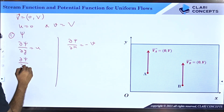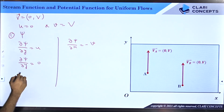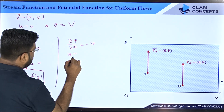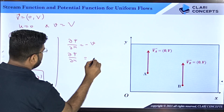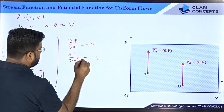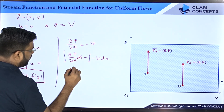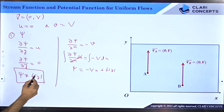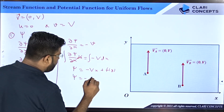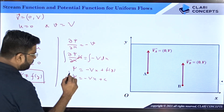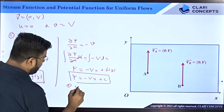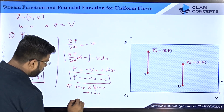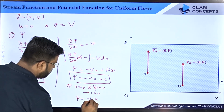For the stream function, ∂ψ/∂y = u and ∂ψ/∂x = −v. Since u equals zero, ∂ψ/∂y = 0, which means psi is not a function of y. Then ∂ψ/∂x = −v = −V. Integrating with respect to x gives ψ = −Vx plus some function of y. But since psi is not a function of y, that function becomes just a constant, and setting ψ = 0 at x = 0 gives c = 0, so ψ = −Vx.